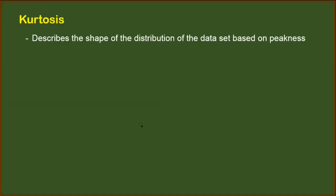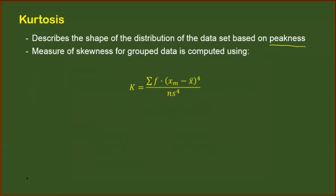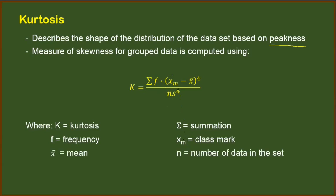Kurtosis, as previously defined, is describing the peakness of a certain distribution. And for group data, it follows this formula. We have K as the kurtosis equals summation of F, frequency, since we are dealing with group data, meaning we are expecting a frequency distribution table. So we have the frequency multiplied to the fourth power of the difference of the class mark and the mean, divided by the number of data in the set times the fourth power of the standard deviation. Don't worry, I know it looks kind of complicated, but we will do this together later in our example.